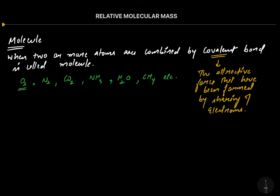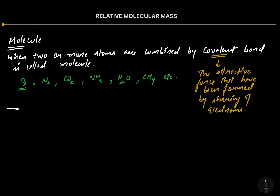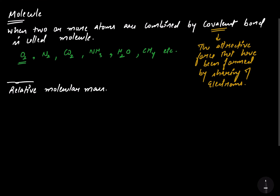The mass of one molecule is called molecular mass. Now, we are talking about relative molecular mass. The relative molecular mass is actually the number of times a molecule is heavier than one-twelfth the mass of a carbon-12 isotope.